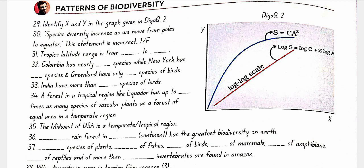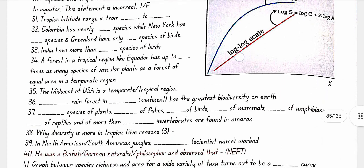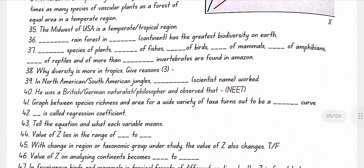The Midwest of USA is a temperate region. The Amazonian rainforest in South America has the greatest biodiversity on Earth. The Amazon contains 40,000 species of plants, 3,000 of fishes, 1,300 of birds, 427 of mammals, 427 of amphibians, 378 of reptiles, and more than 1,25,000 invertebrates.